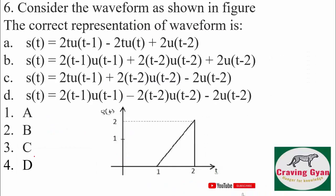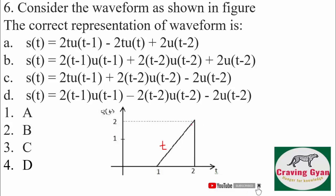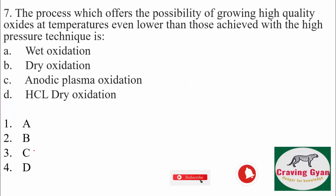Sixth question: consider the waveform as shown in the figure — you have to write the time domain representation. Whenever you have a slope you represent it with t, and whenever you have a step it is u(t). Here you have a positive ramp, at t=2 a negative ramp, and a negative step, so you should look for plus, minus, minus — the only option that follows is option number 4.